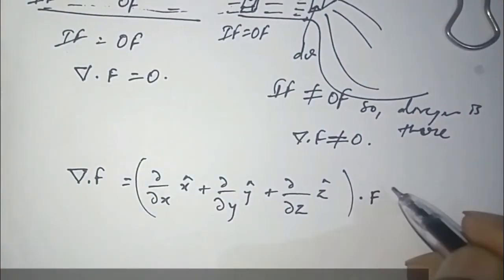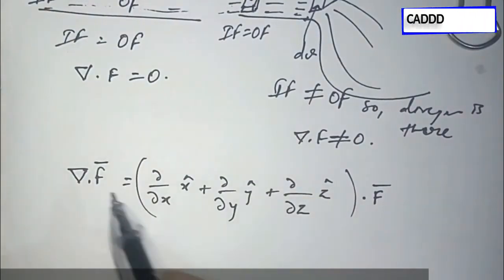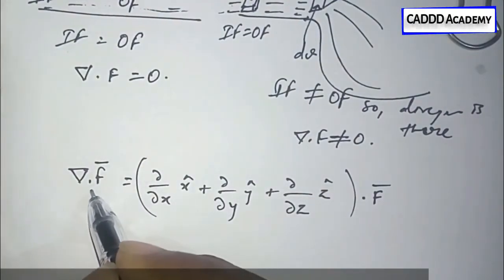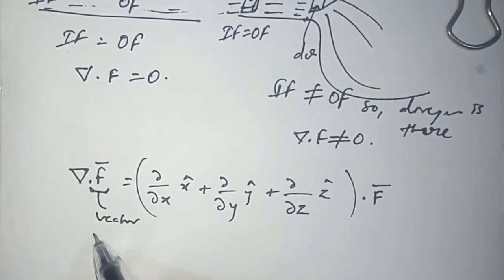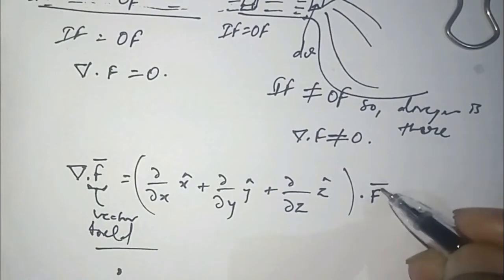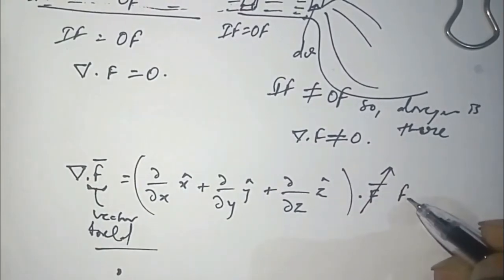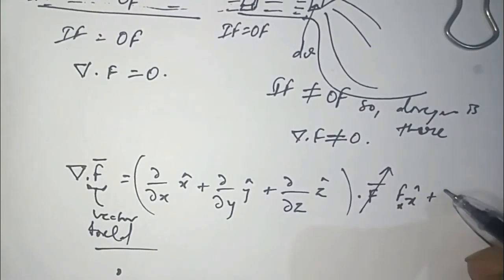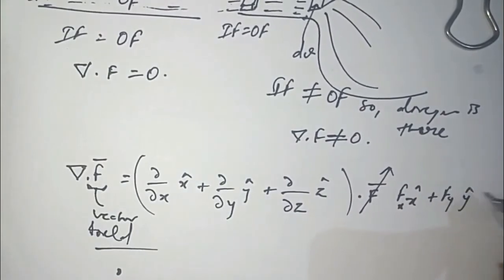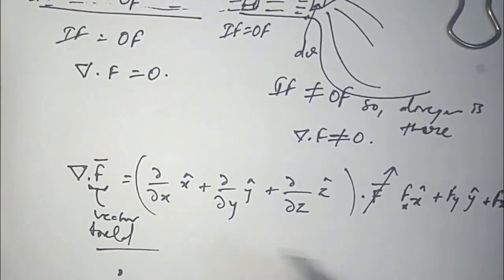Divergence is of a vector field F, which is written as Fx in the x-cap direction, plus Fy in the y-cap direction, and Fz in the z-cap direction.